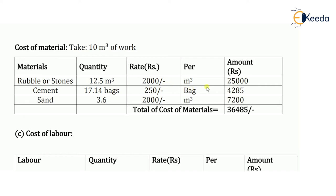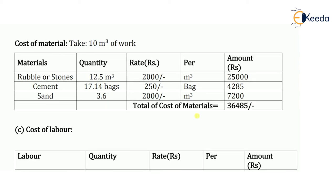For the amount required for each material, I multiply quantity by rate. For rubble: 12.5 m³ into 2000 rupees per m³ comes as 25,000 rupees. For cement: 17.14 bags into 250 rupees per bag comes as 4,285 rupees. For sand: the amount comes as 7,200 rupees. Adding all these together, the total cost of materials is 36,485 rupees.